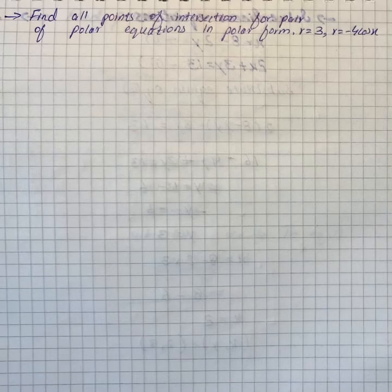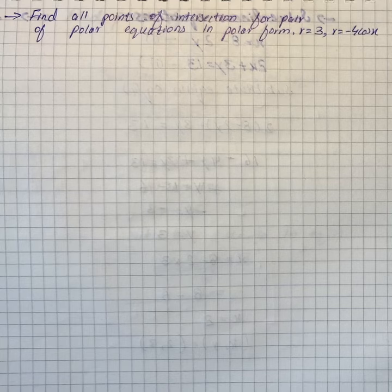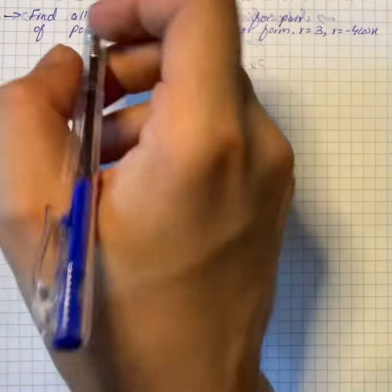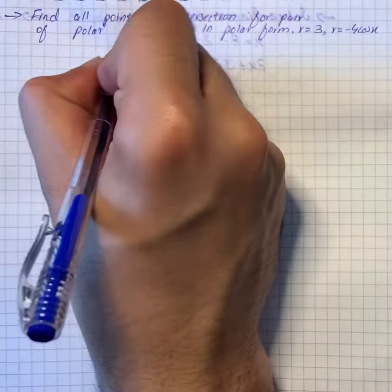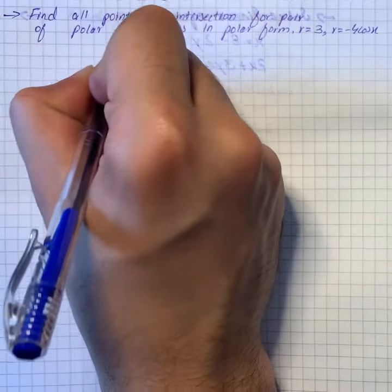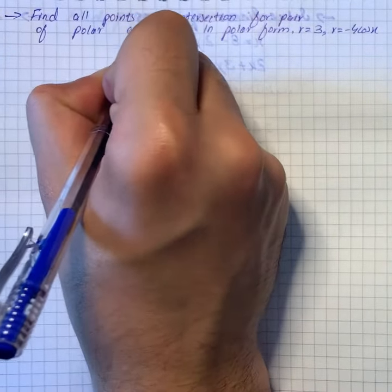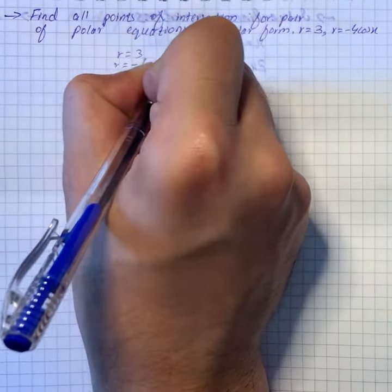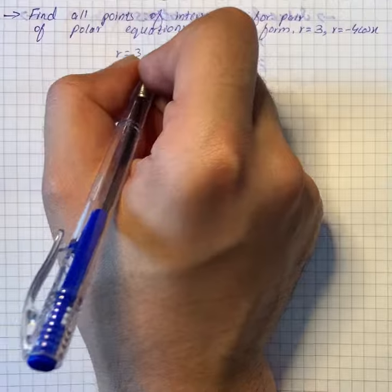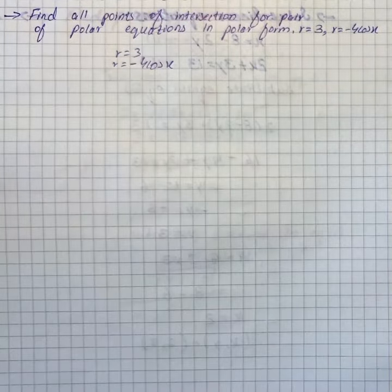Here we have a question that says: find all points of intersection for a pair of polar equations in polar form. We have r equal to 3 and r equal to minus 4 cos x.